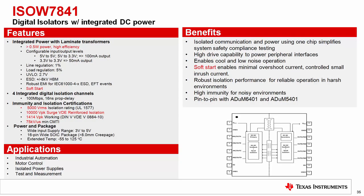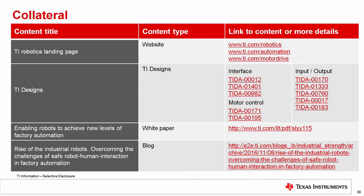More details on the ISOWATT 7841: it is a digital isolator with integrated DC power, delivering 0.5 W of output power at high efficiency. Line regulation is 1%, load regulation around 5%. The speed is 1 Mbit per second with a delay of only 16 ns. The isolation rating goes up to 5 kV RMS, supporting common-mode transient immunity of at least 75 kV per microsecond. For further information, visit TI's robotics landing page at ti.com/robotics, or ti.com/automation or /motor-drive. All shown TI designs are available on ti.com with schematics, test data, and BOMs, along with whitepapers and blogs on robotics. Thank you for your attention.